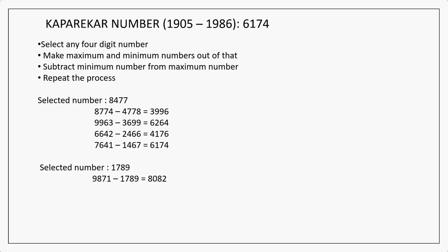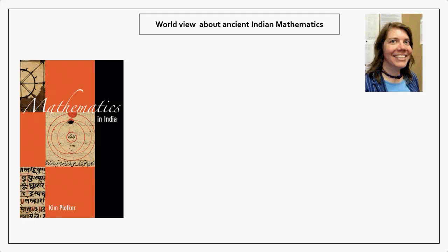I have given two examples. 1789 - maximum number is 9871, minimum number is 1789. When you subtract, you get 8082. From 8082, you get maximum number 8820, minimum number 0288. You get 8532. And with 8532, again you come to 6174. Kaprekar has got many such works. He has contributed to number theory many things.